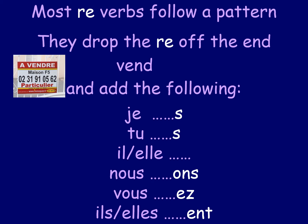You need to learn those endings: S, S, nothing, ONS, EZ, ENT. Luckily the bottom three (ONS, EZ, ENT) are the same as ER verbs, but the top ones are different. The way French verbs work is all about remembering different endings for different tenses, so start learning them now. You can search 'French RE verb song' on YouTube to find helpful videos, or even create your own song.